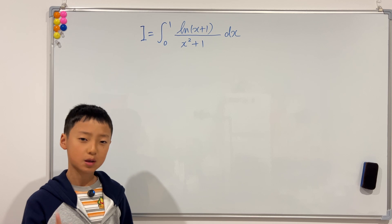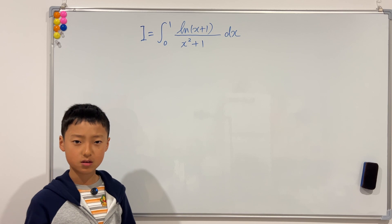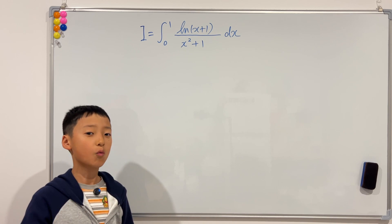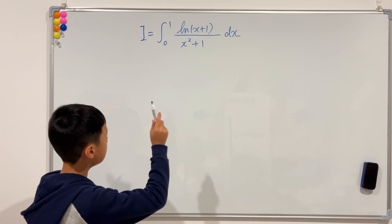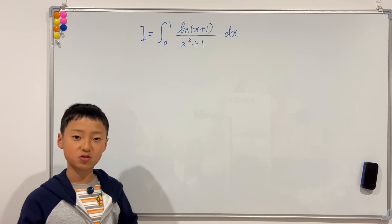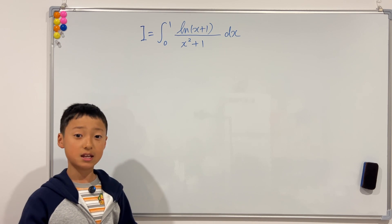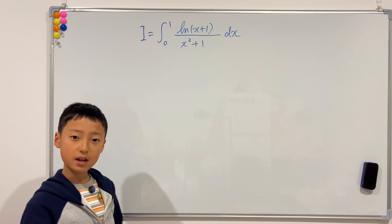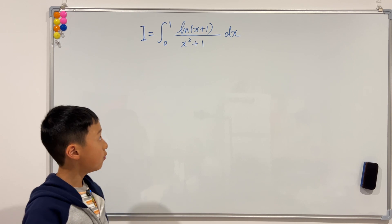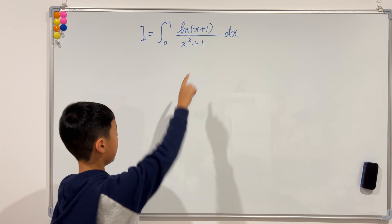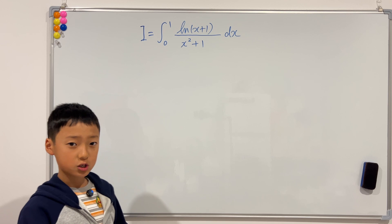We are actually going to use trig substitution. What trig function should we let x be? I'm going to give you two reasons why tangent theta should be the one. First of all, because if we look at the denominator and plug in x equals tangent theta, then we see that tangent squared theta plus 1 equals sec squared theta, an easier trigonometric function. Also, if you take the derivative of tangent theta, it will be sec squared theta, so we can just cancel out the denominator with that term, making it simpler.